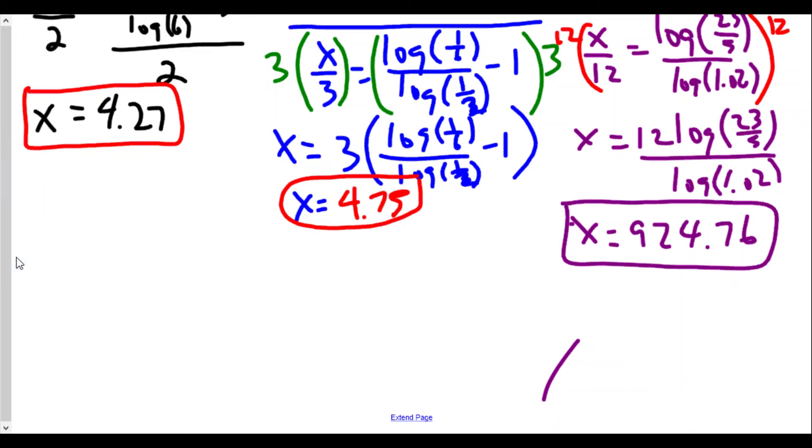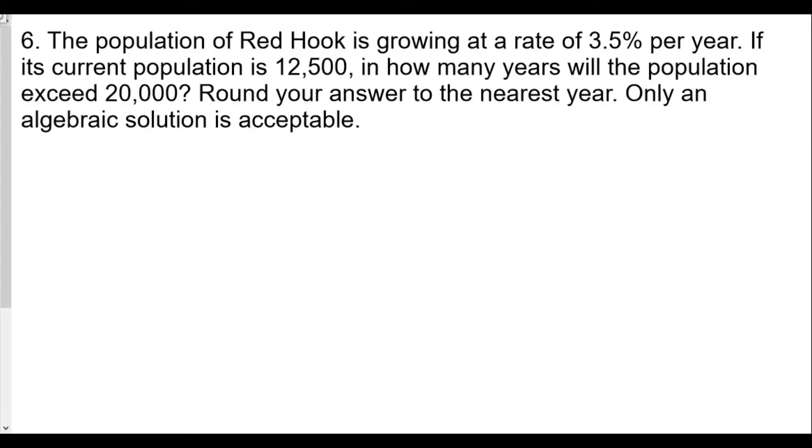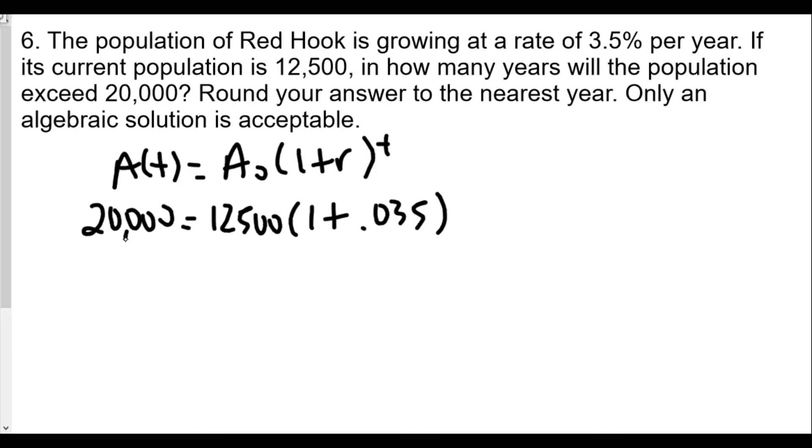In this set of questions, I'll make this full page here for number 5. Number 6. The population of Red Hook is growing at a rate of 3.5% per year. The population is 12,500. In many years, how many years will the population exceed 20,000? Only an algebraic solution is acceptable. So what we're going to do is we're going to set up our equation we use for these exponential functions, a(t) equals a_0 times (1+r)^t. And what we're going to plug in for r is 0.035. That's the rate. Our initial value is 12,500. The population is going to be 20,000 we're looking for. And in this situation, t is the one we don't know.